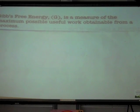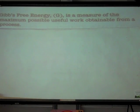Now what is this G, Gibbs free energy? Well it is a measure of the maximum possible useful work obtainable from a process. How much energy is available to do work. That is what Gibbs free energy tells us. How much work can we get out of a particular reaction, process, but reaction is what we're talking about.